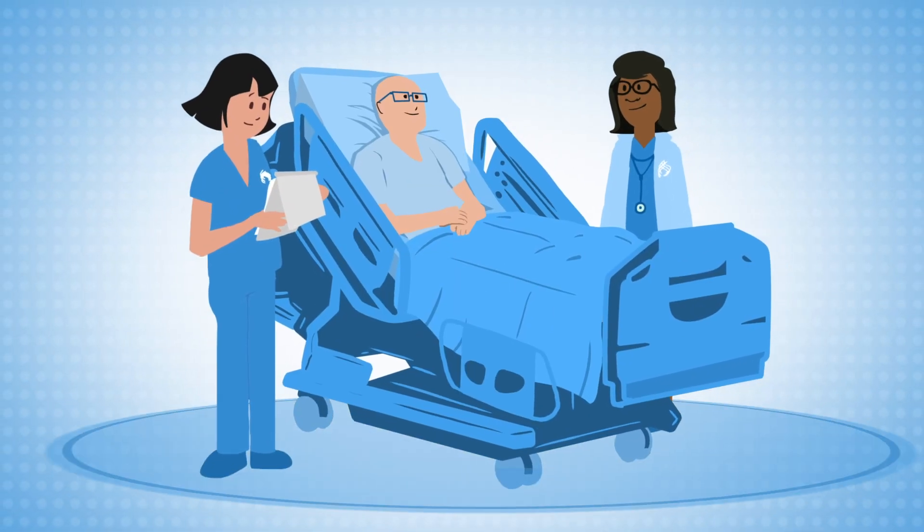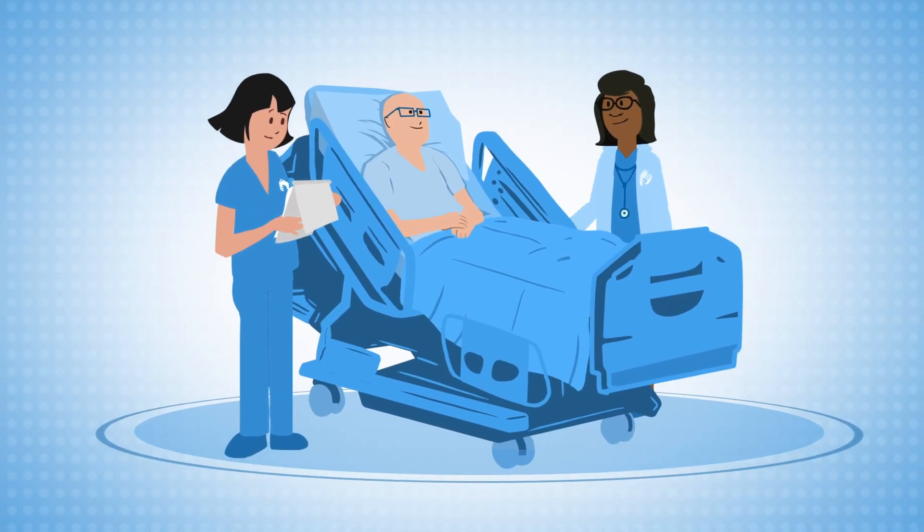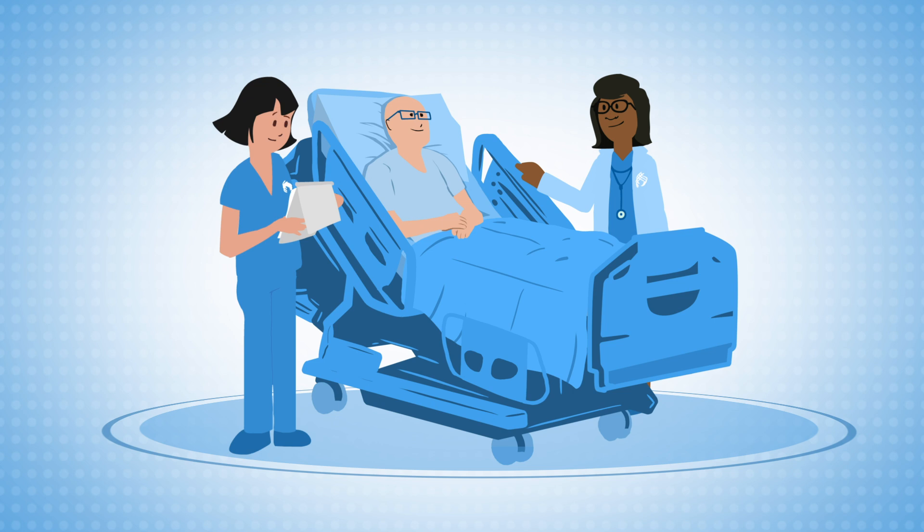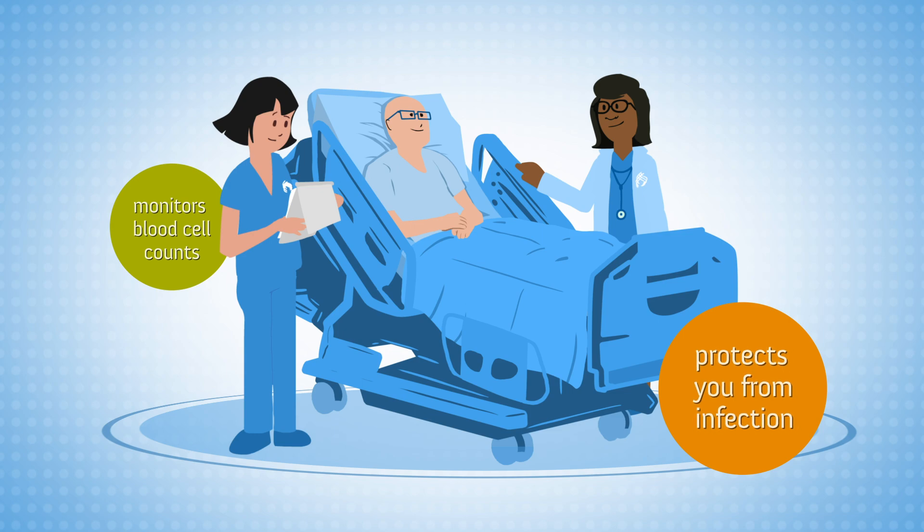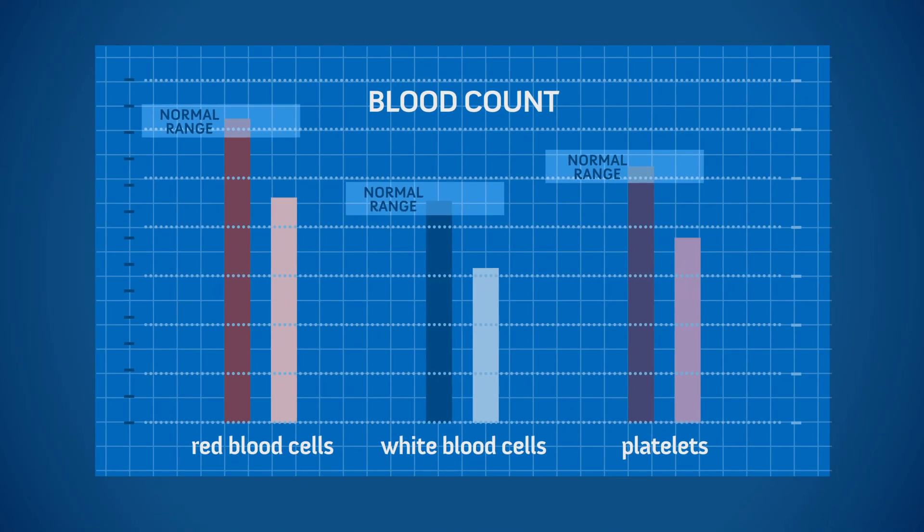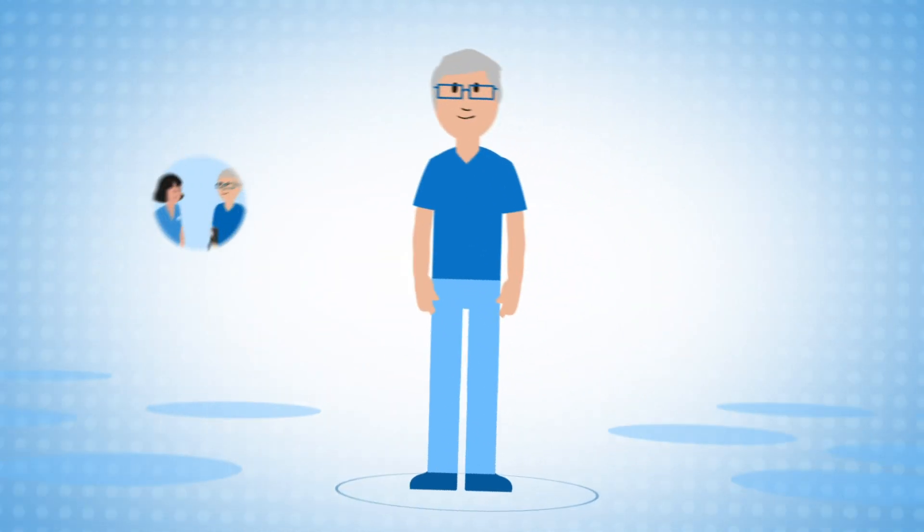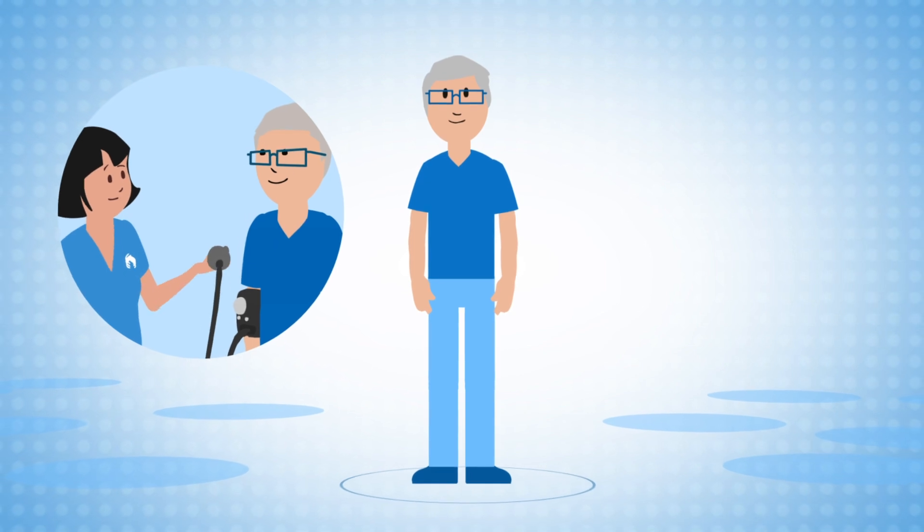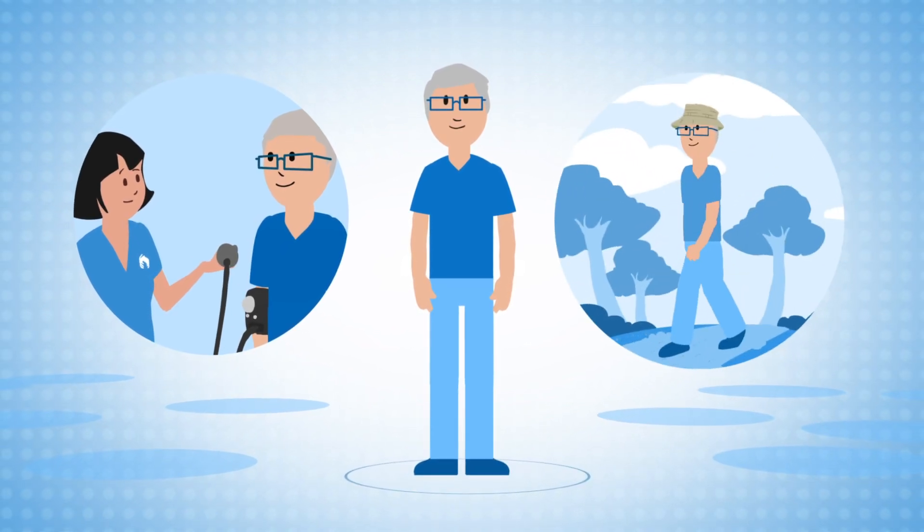After your stem cell transplant, you will remain under close observation for a few weeks while your Sarah Cannon care team monitors your blood cell counts and protects you against infection. Over time, your transplanted stem cells multiply and produce blood cells to create a healthy immune system. You will see your care team frequently to ensure your blood levels remain healthy and you are doing well.